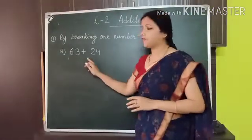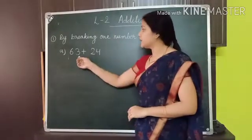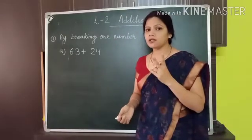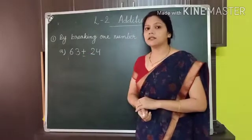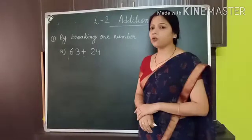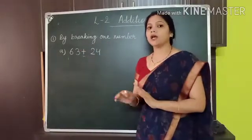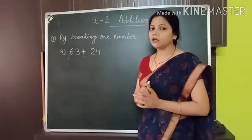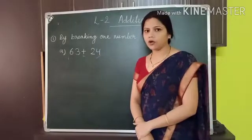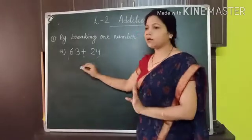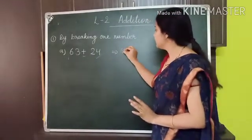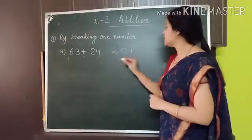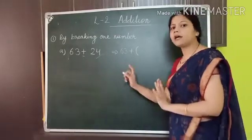As you can see, I have written here two different numbers and in between I have given a plus sign. This is the sign of addition. If we want to add two numbers, then we have to give this sign — the plus sign. So, in this, what we have to do? We are adding two numbers by breaking one number. First, we have to choose which number we will break. We are breaking this number. So, we have to write the first number as it is — 63. Now, we have to give the plus sign, then we will give a bracket and break this number.